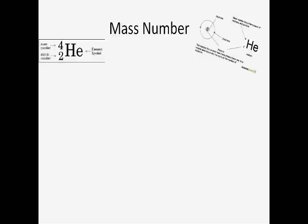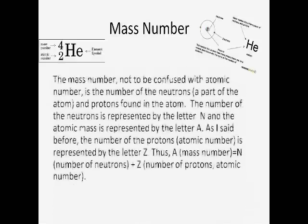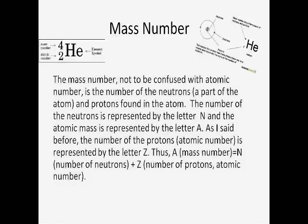The mass number. The mass number, not to be confused with the atomic number, is the number of the neutrons, a part of the atom, and protons found in the atom. The number of the neutrons is represented by the letter N, and the atomic mass is represented by the letter A.